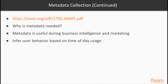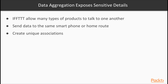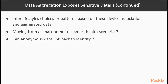Metadata is very useful for business intelligence and marketing, meaning many IoT products will capture and transmit this data to the cloud for further analysis. Flexible approaches such as IFTTT allow many types of smart home products to talk to one another, sending data to the same smartphone or home router and creating unique associations not originally intended for either product. Could someone infer your lifestyle choices or patterns based on these device associations and aggregated data? What about moving from a smart home to a smart health scenario — is data anonymized in one instance ever aggregated with data that could link back to an identity?